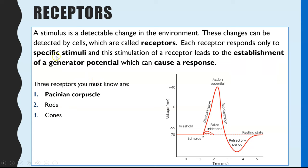When a receptor detects a stimulus, if the stimulus is large enough it can result in the establishment of a generator potential, or in other words an action potential, and therefore it initiates a response.